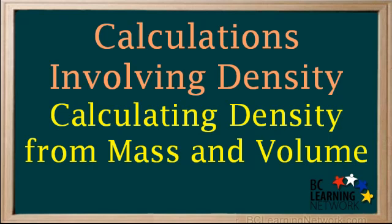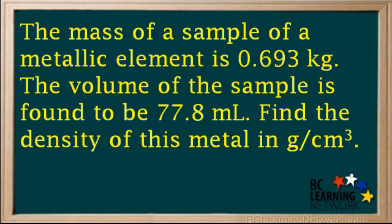This example will show you how to calculate the density of a sample if you know the mass and the volume. The mass of a sample of a metallic element is 0.693 kilograms. The volume of the sample is found to be 77.8 milliliters. Find the density of this metal in grams per centimeter cubed.